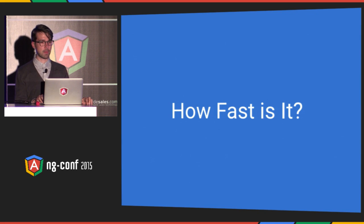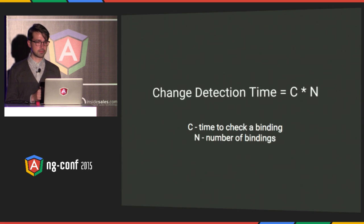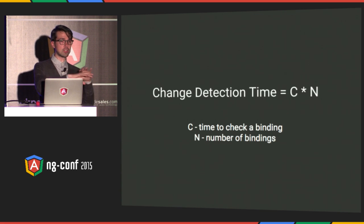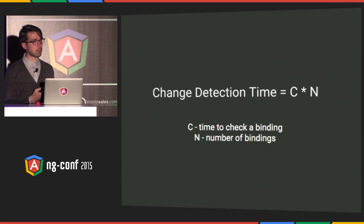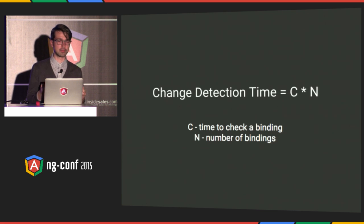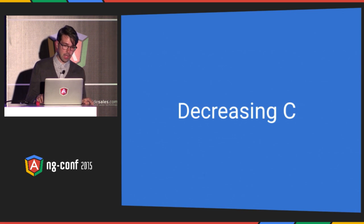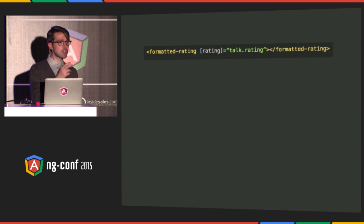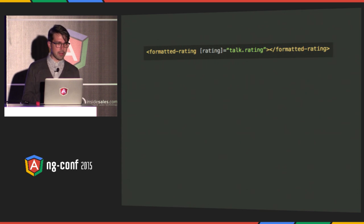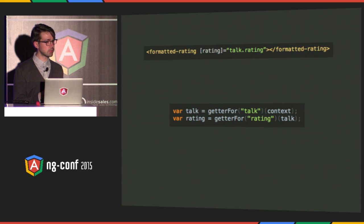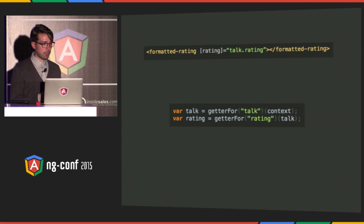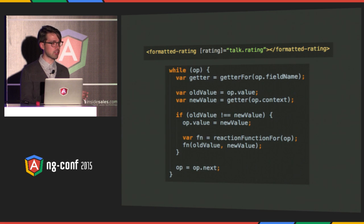To answer this question, let's look at this formula, which defines how long it takes to go through the change detection graph. N is the total number of bindings in the system, and C is the average time it takes to check a binding. There are two ways to make the system faster: decrease C, or be smarter about N. Let's start with C. To understand how we made C smaller, let's dissect a simple binding. A reasonable way to evaluate this binding is to get a getter function for every property read and use it to get the value of the property.